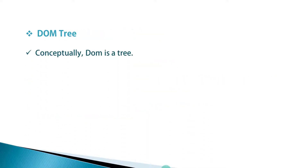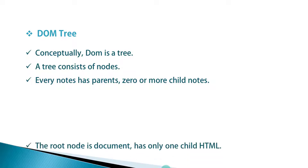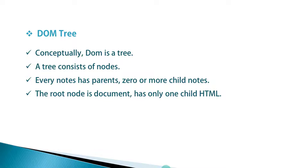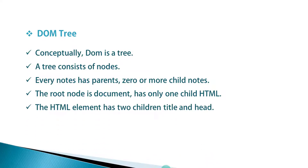Conceptually, DOM is a tree. A tree consists of nodes. Every node has parents or zero or more child nodes. The root node is document, which has only one child: HTML. The HTML element has two children: head and body.